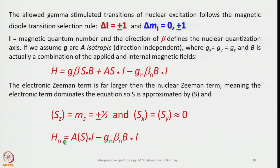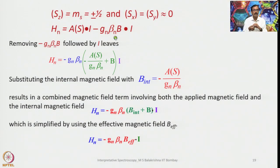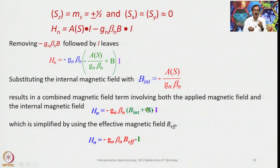Considering the z-axis, H_n = AS·I − g_n β_n B·I. Substituting the internal magnetic field with B_internal = AS/(g_n β_n), this results in a combined magnetic field term involving both the applied and internal magnetic fields — the latter generated by the magnetic behavior of those nuclei. This is simplified by using the effective magnetic field B_eff — the net magnetic field expressed by the nucleus — giving H_n = g_n β_n B_eff · I.